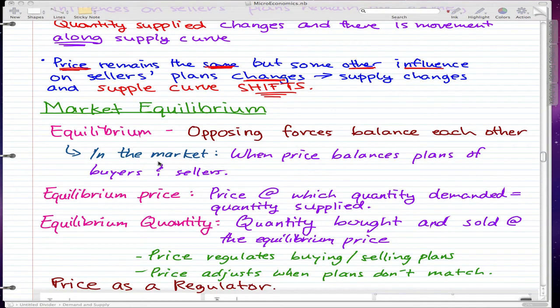Now equilibrium occurs when the price balances the plans of buyers and sellers, and the equilibrium price is the price at which the quantity demanded equals the quantity supplied. The equilibrium quantity is the quantity bought and sold at the equilibrium price.